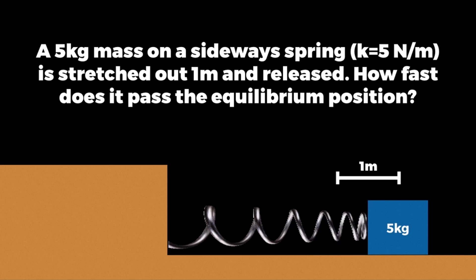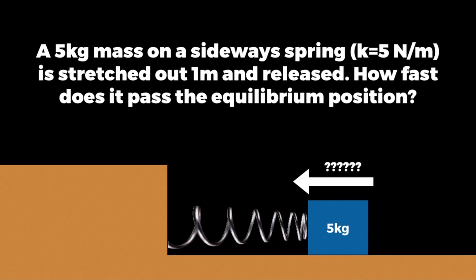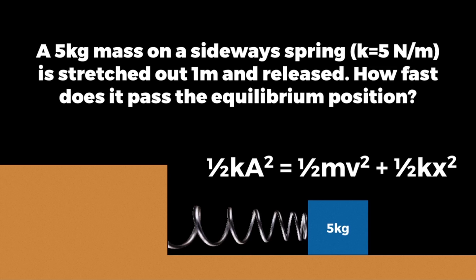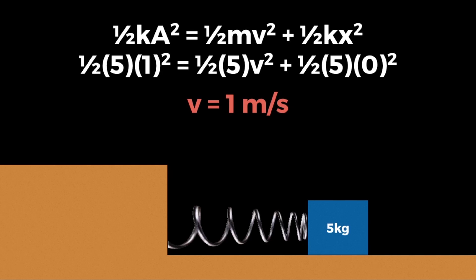We stretch the object one meter and release it. The object snaps back and moves past the equilibrium position at a certain speed we need to find. We use the equation: one half kA squared equals one half mv squared plus one half kx squared. The amplitude is one meter since we stretched it one meter. The spring stiffness constant k is five newtons per meter, the mass is five kilograms, and since we want the speed at the equilibrium position, x equals zero. Plugging in all variables and solving for velocity, we get that velocity equals one meter per second.